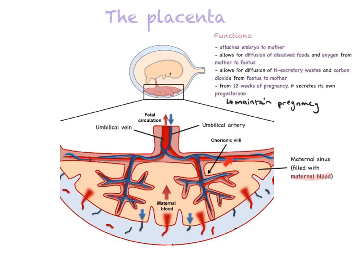The chorion extends into the maternal sinus to form chorionic villi. Note that the textbook on page 57 actually spells it 'chronic villi' — make sure you correct that to chorionic villi. These chorionic villi have blood vessels of the fetus that are continuous with the umbilical artery and umbilical vein. The maternal blood in the sinus has a large amount of dissolved food and oxygen and a small amount of carbon dioxide and waste products, so through diffusion at the chorionic villi, those dissolved nutrients and oxygen diffuse into the chorionic villi and therefore into the umbilical vein.